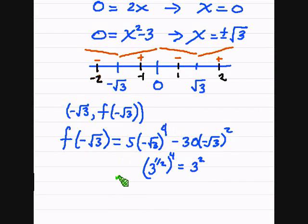So we end up having 5 times 3 squared. Now remember this negative right here. If it's raised to the 4th power, it's just going to disappear. We have negative square root of 3 squared. So that square root is going to disappear. And so is that negative because it's positive.